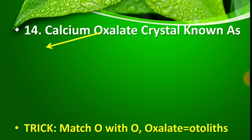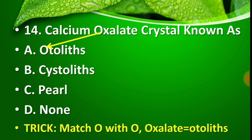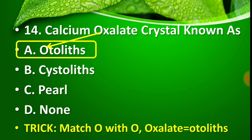Question number 14: Calcium oxalate crystal is known as — Option A: autolith, Option B: cystolith, Option C: pearl, Option D: none of the above. The right answer is Option A — autolith. A trick to remember: match O with O — Oxalate corresponds to Autolith. Calcium oxalate = autolith.